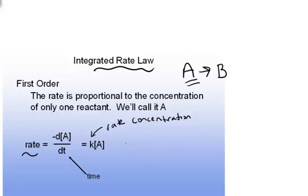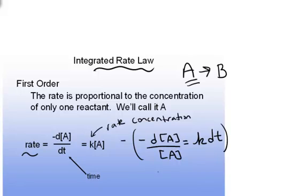Of course, to integrate, you need to pull all of the like variables to the same side. So we'll have negative d[A] divided by A equals K times dt. We'll multiply both sides of the equation by negative one to have all the constants on one side, and we'll end up with d[A] divided by A equals negative K times dt. Now we're ready to integrate both sides of the equation.